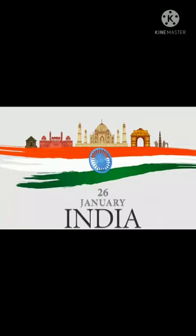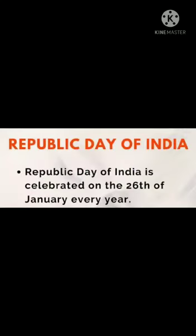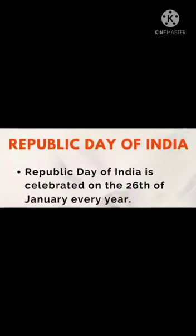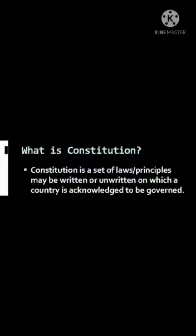Yaani ki, vaisi government bani jiske according log apna representative choose karte hain. Kaise choose karte hain? Votes dete hain. Jab aap apna representative, prime minister, chief minister choose karte hain, toh kaise kiya jaata hai? Jo bhi log 18 years ke ho jaate hain, wo apna vote dete hain, aur jisko zyada votes aate hain, wo humara chief minister ya prime minister banta hai.